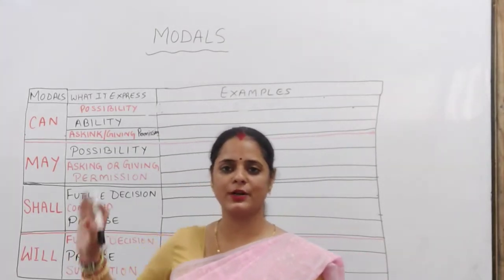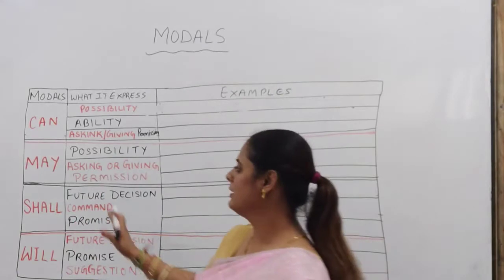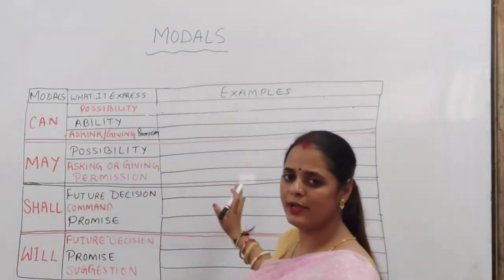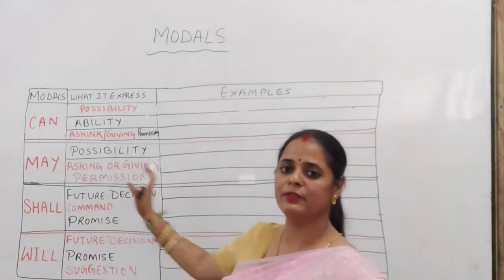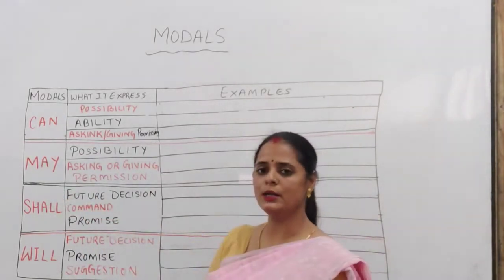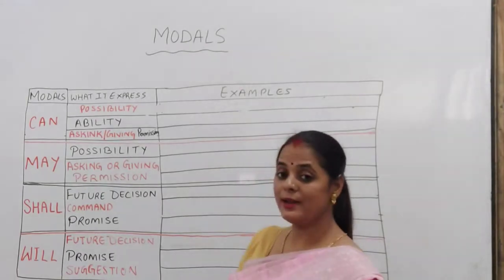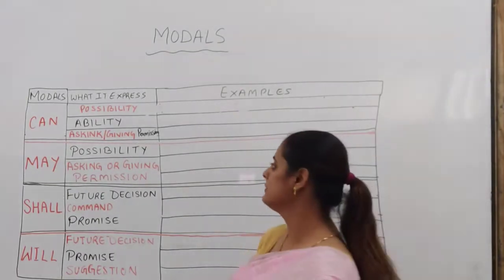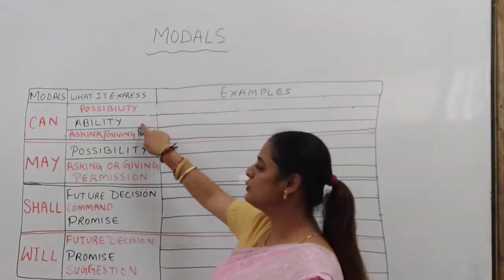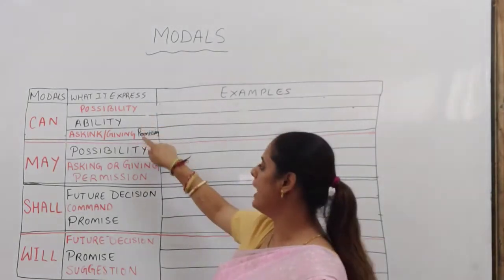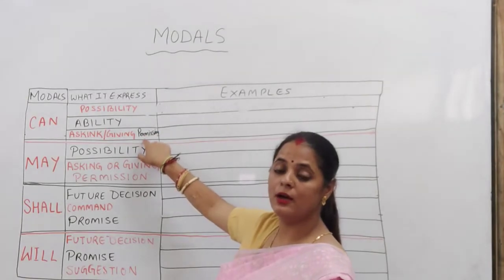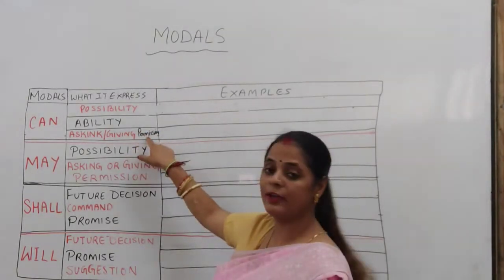We will be learning what these modals are, the expressions, and how examples are made with the help of these modals. The first modal is 'can'. Can is used to express possibility, to express ability, and to express asking or giving permission.